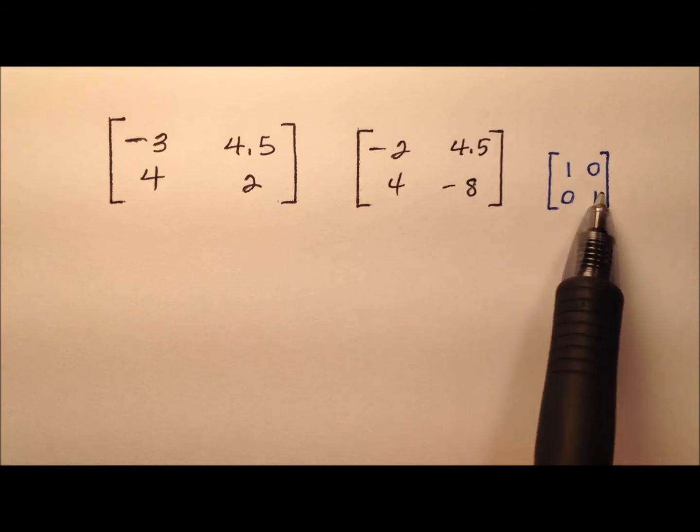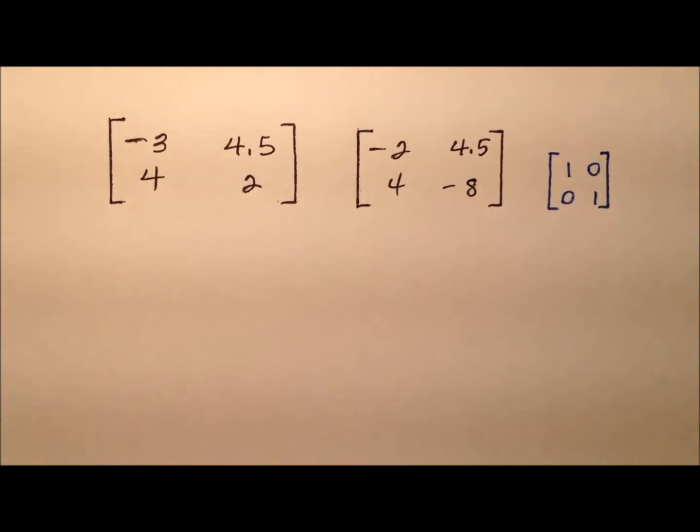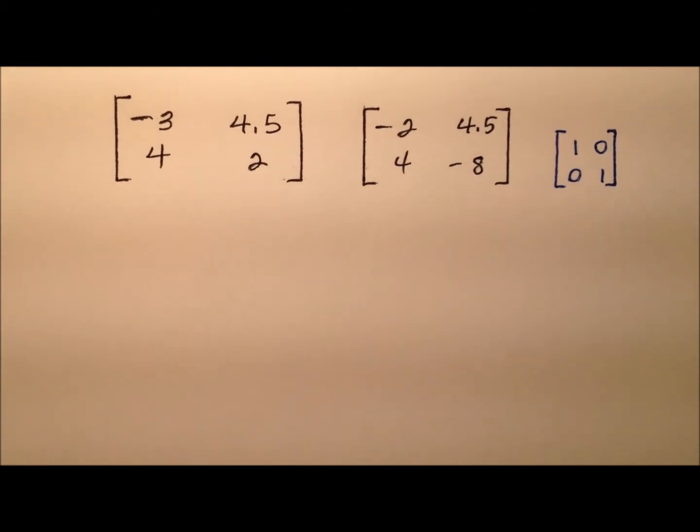So we have a two by two matrix, this main diagonal has all ones and then all the other values are zeros. So let's go ahead and multiply these two.